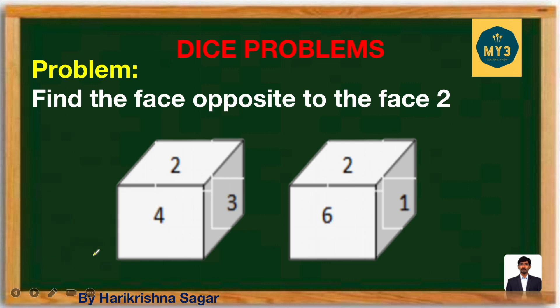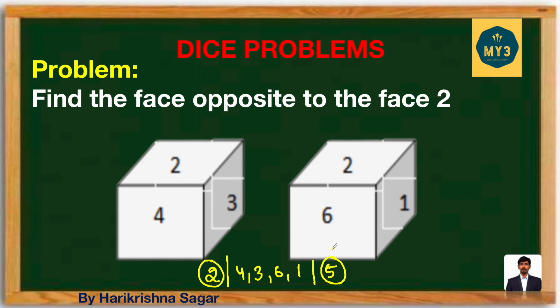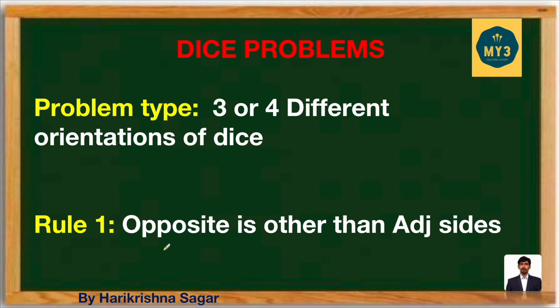For example, the question is: what is the face opposite to two? The bottom face is required, but using visualization it's difficult to figure out what is there at the bottom. Instead of finding the opposite face directly, I try to observe what are the adjacents to two. From the dice, four and three are adjacent to two; six and one are also adjacent to two. Whatever number is not there will be treated as opposite — here it's five. So, two opposite is five.